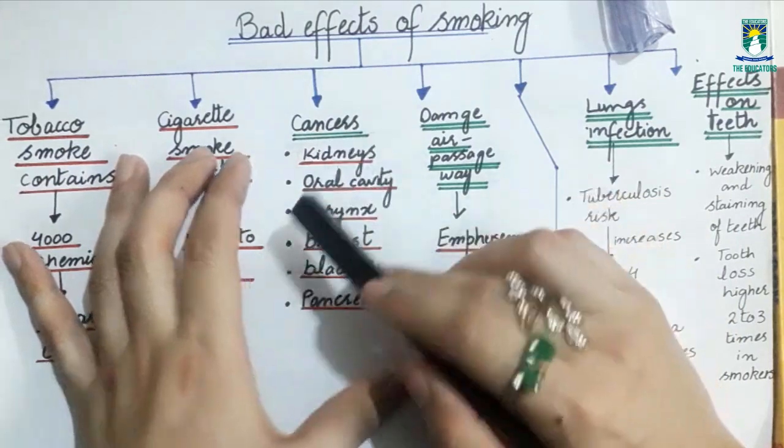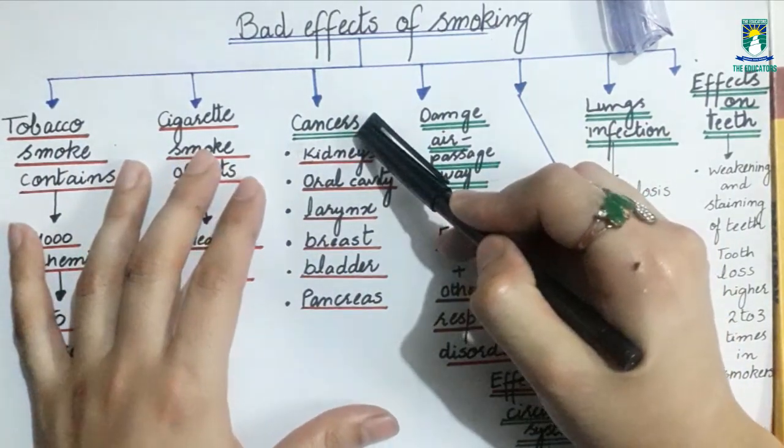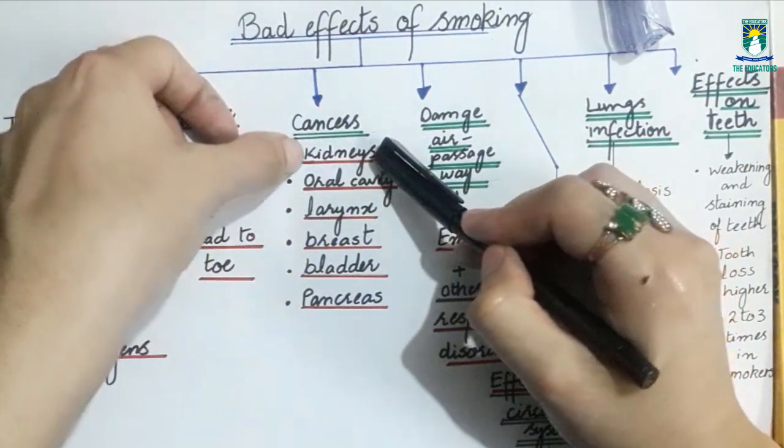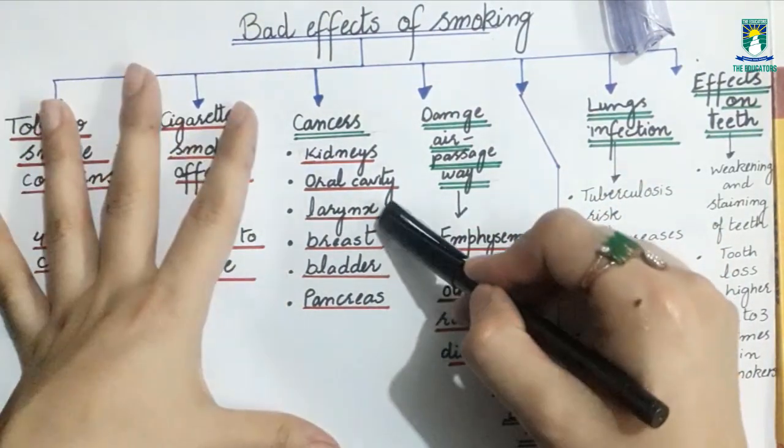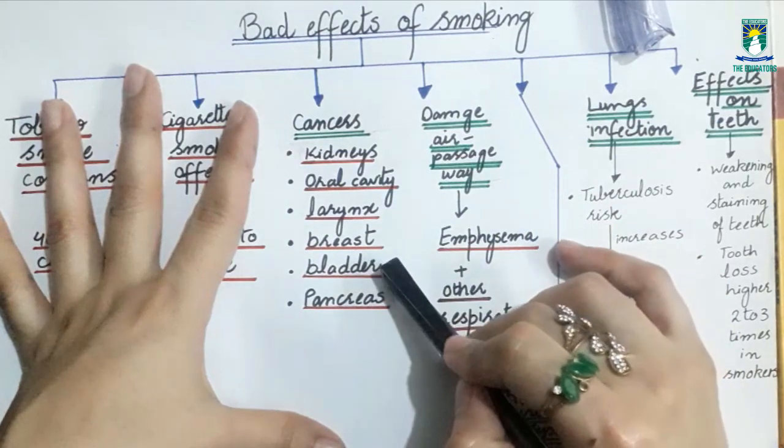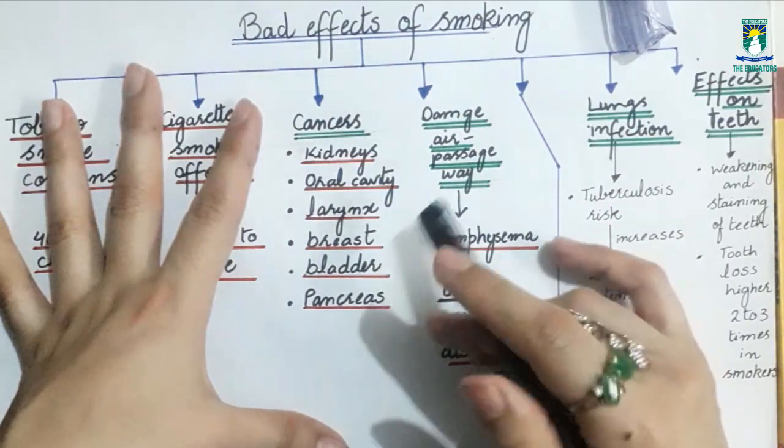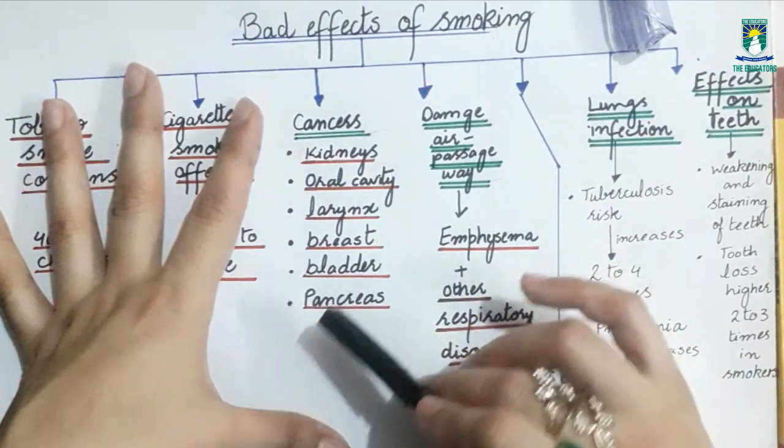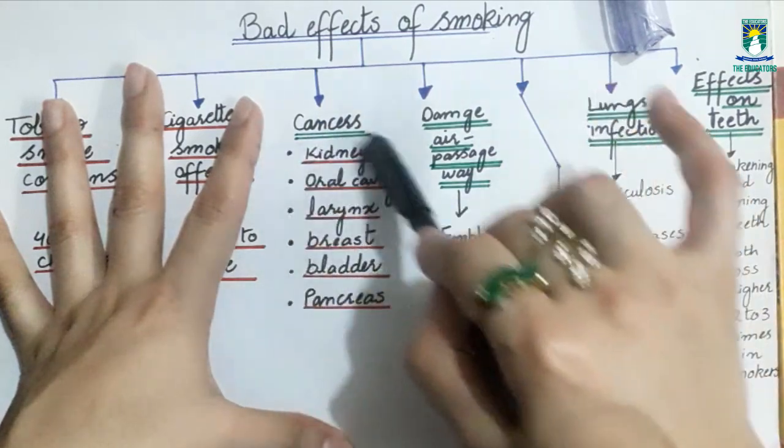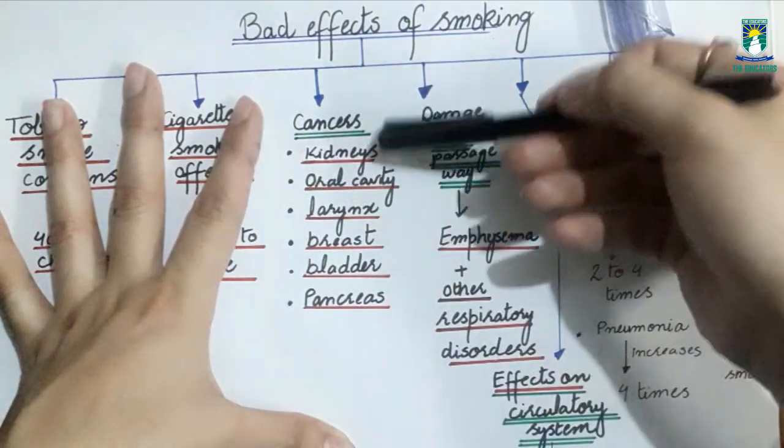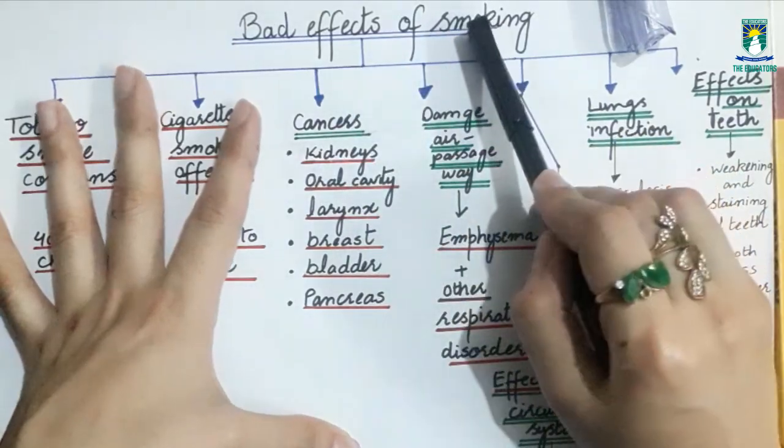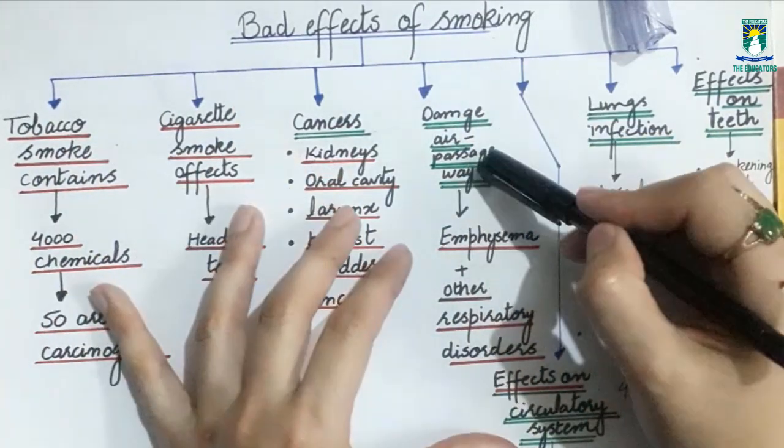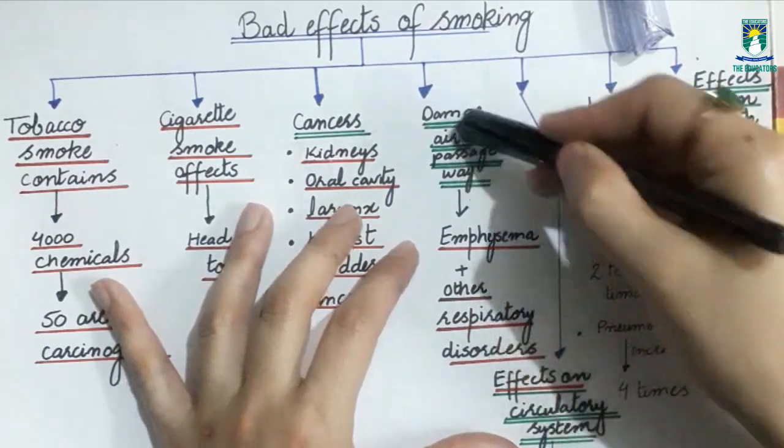As you know that smoking may also lead to the cancers in kidneys, oral cavity, larynx, breast, bladder and pancreas. Larynx is a voice box while bladder is a urinary bladder in which your urine is stored in a temporary way. Now all of these parts cause cancer due to smoking.